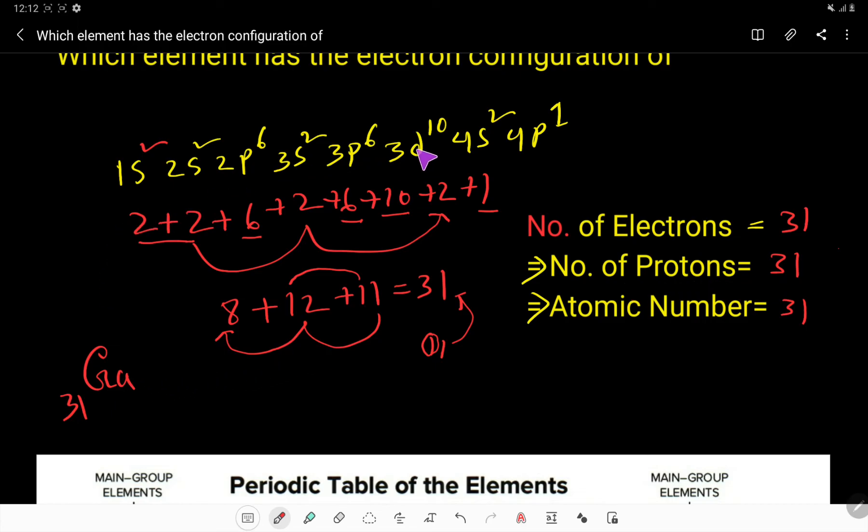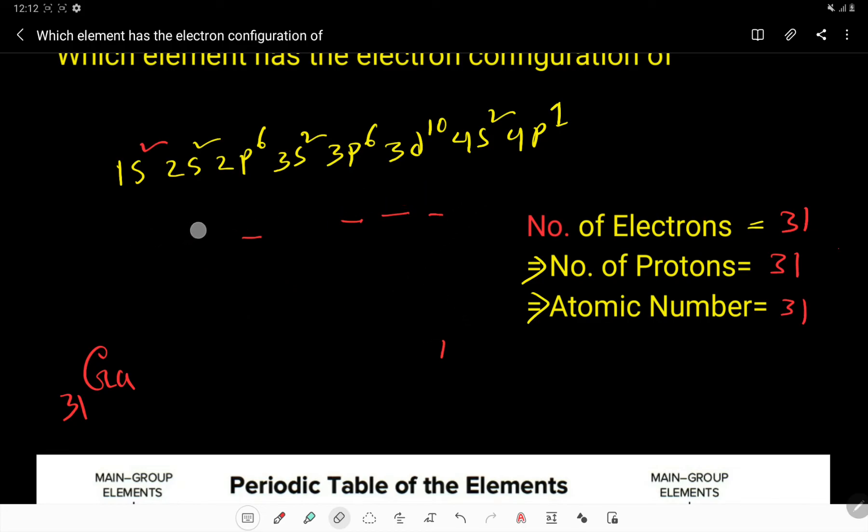Sometimes you will get this electronic configuration. Look, 6 plus 2 plus 6 is 12, plus 2 is 14, 16, 18. So this is argon.